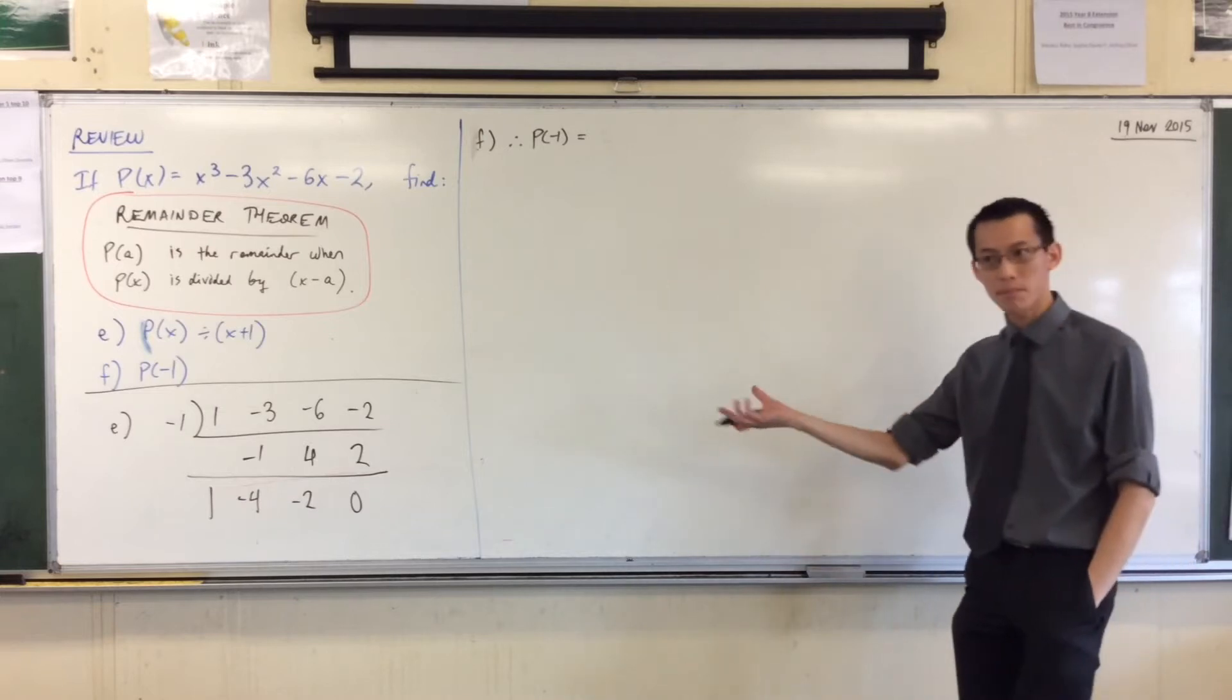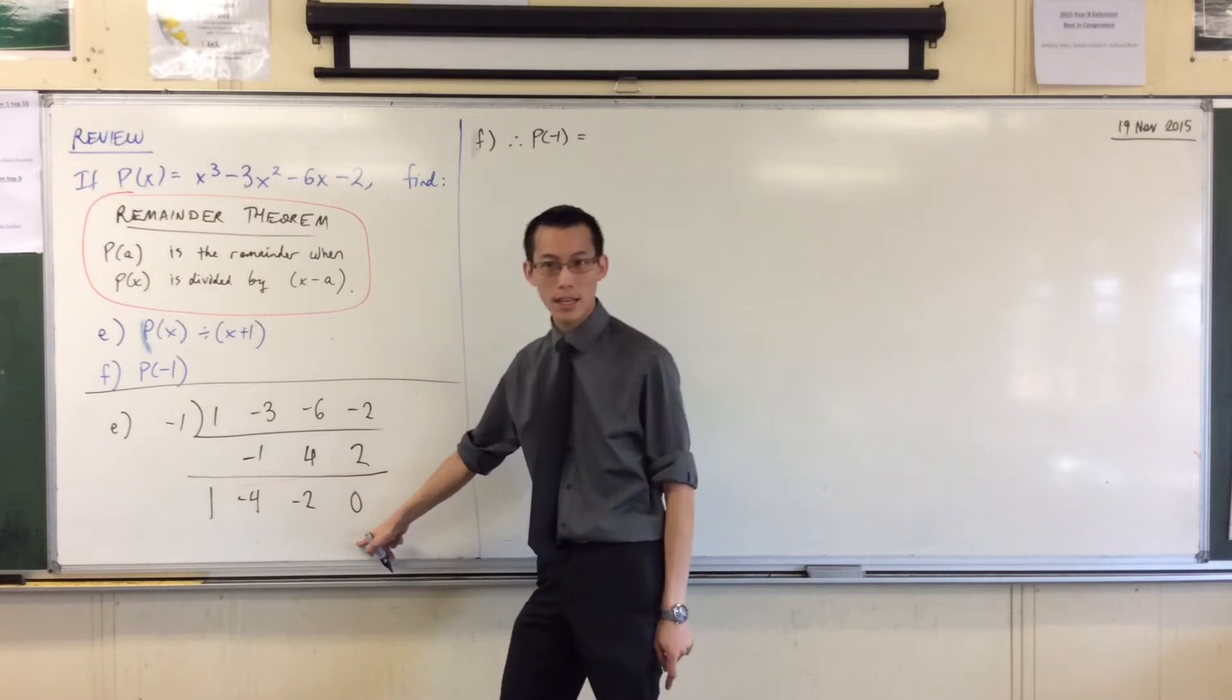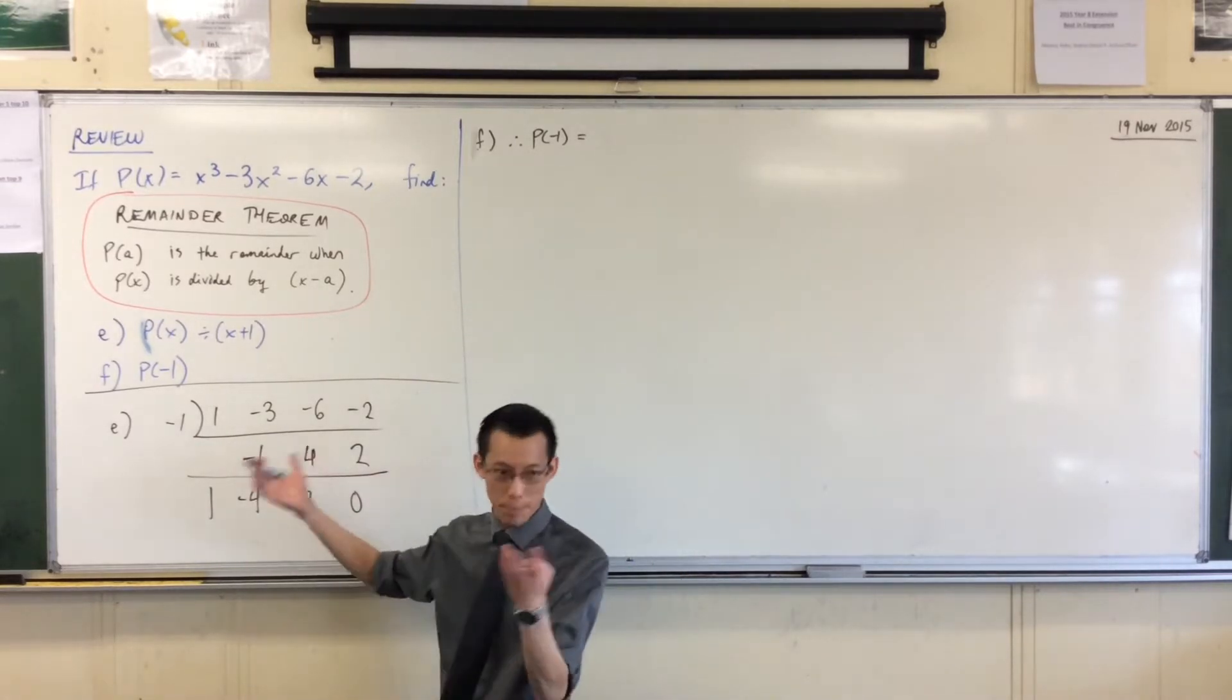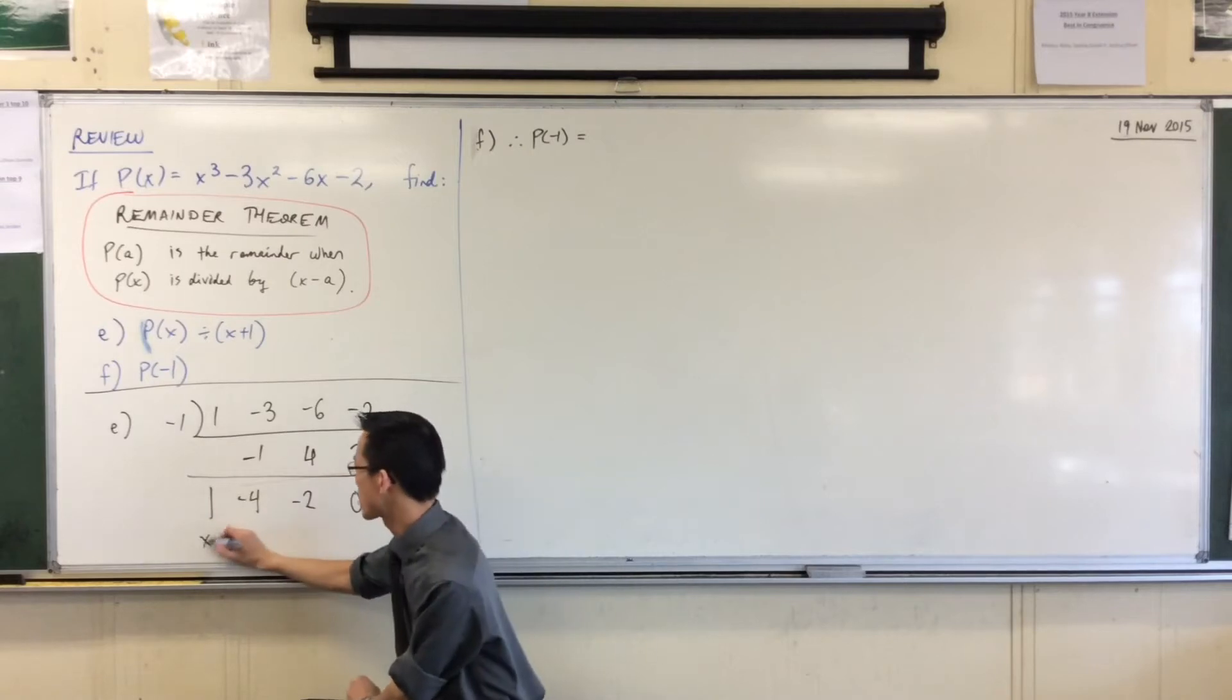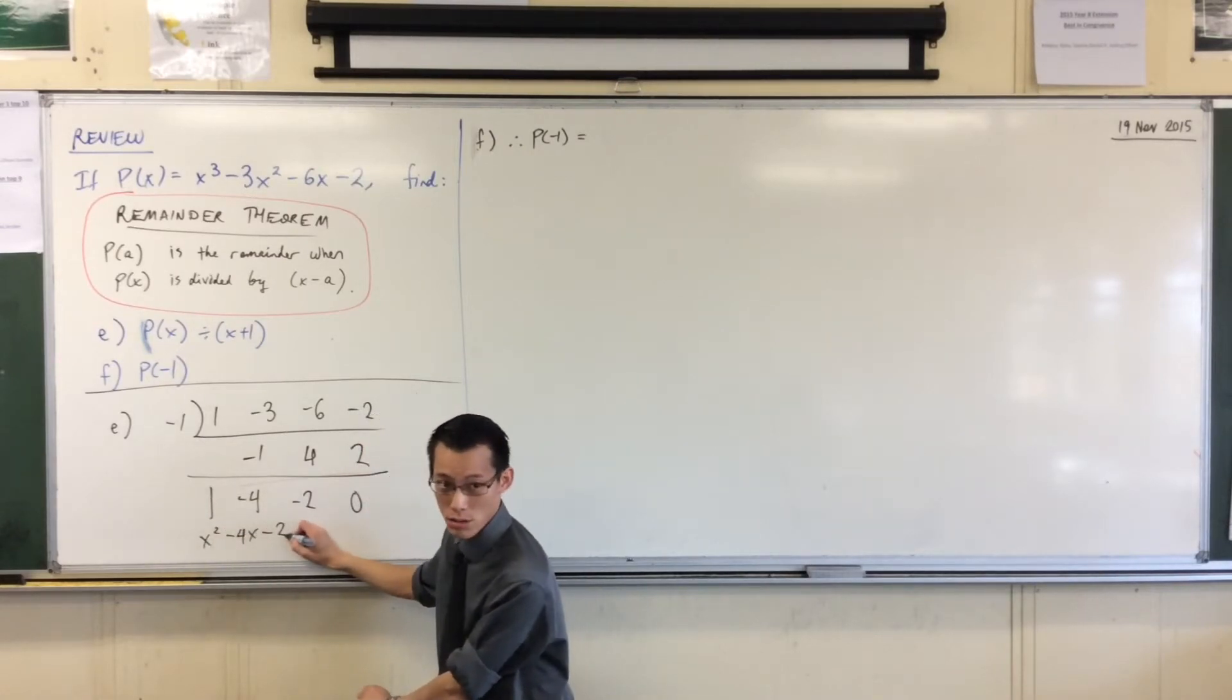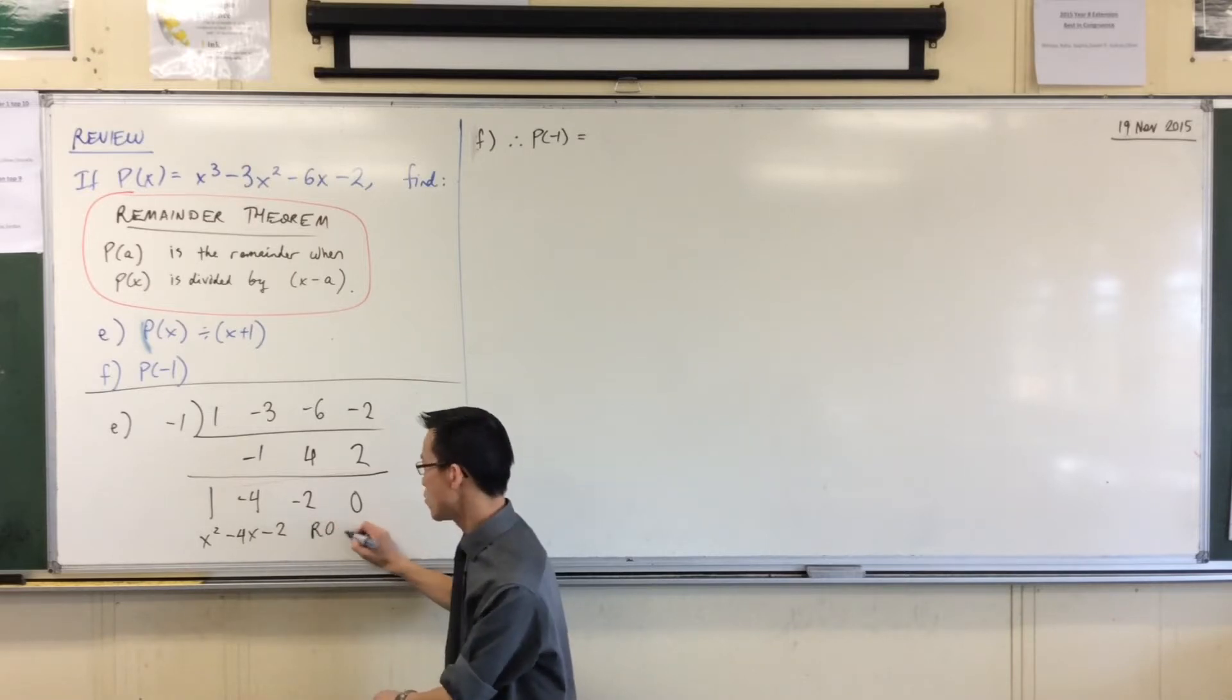But remember I do have to interpret. What does that mean? Here's my question down here. So again, I'm still dividing a cubic by a linear, so I'm going to get a quadratic which is x² - 4x - 2. What's that number on the end mean? There's a remainder of 0.